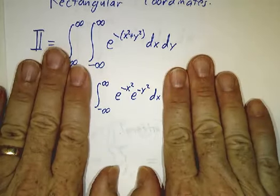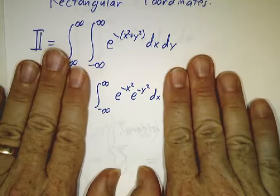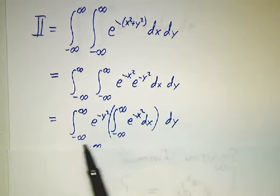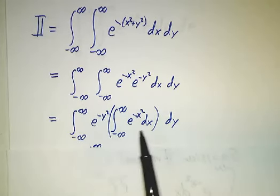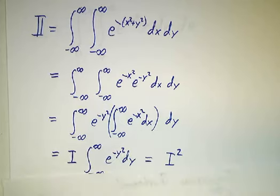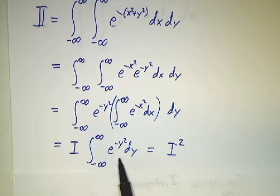Now, when we do the inner integral, e^(-y²) is just a constant—it pulls out. So we wind up with e^(-y²) times the integral from -∞ to ∞ of e^(-x²)dx. But that's I. That's our first integral, I. So it's I times the integral from -∞ to ∞ of e^(-y²)dy. Well, that's I all over again, so we get I².